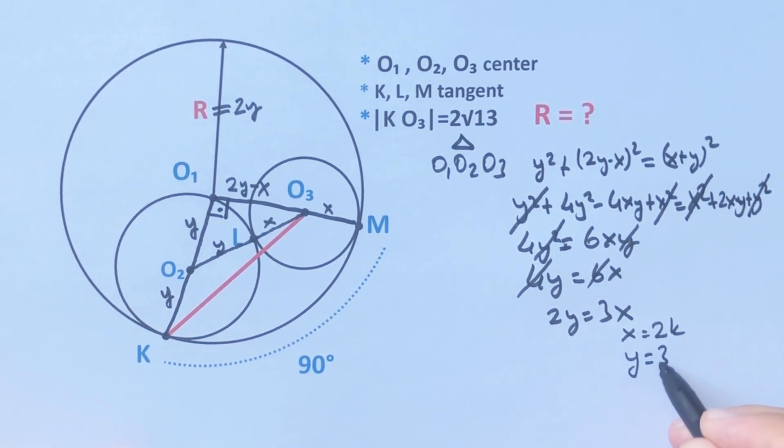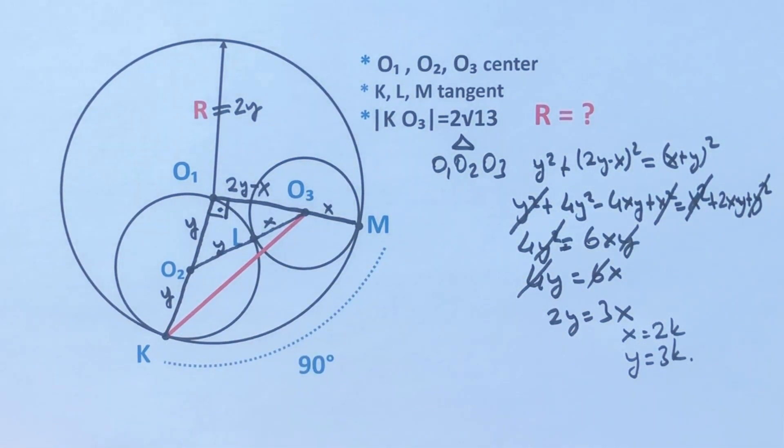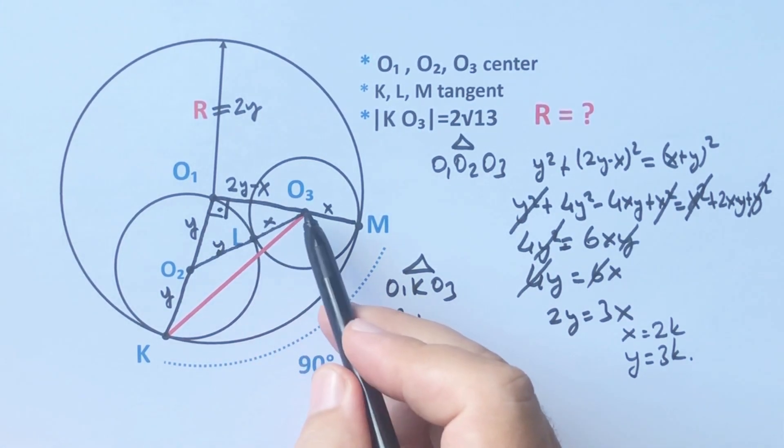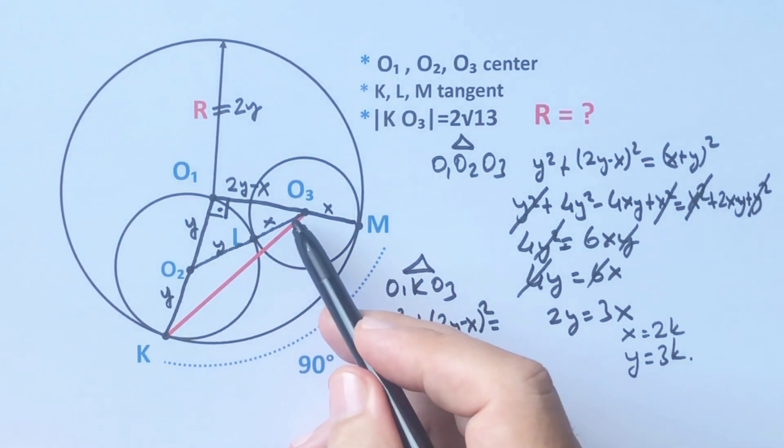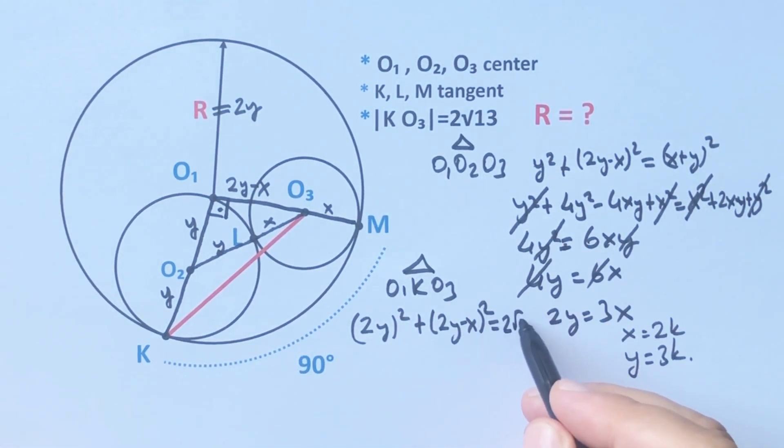y must equal 3k. And then for this triangle in the middle, if we apply the Pythagorean theorem: (2y)² plus (2y minus x) whole squared equals (2√13)².